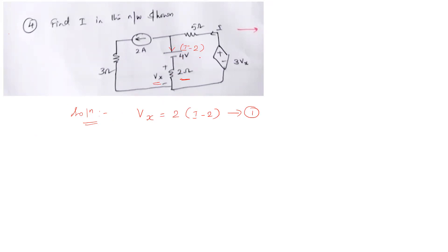Now we will apply KVL to this loop — loop 2 — since they have asked for the value of I in this loop. We will take the direction of the current as given in the question, which is anticlockwise. So we start with this voltage and take the anticlockwise direction.